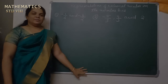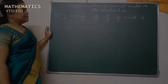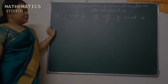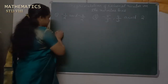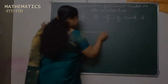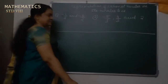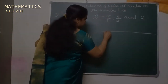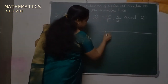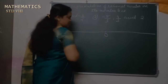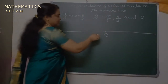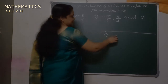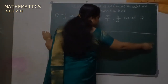How we can represent a rational number on a number line. Here is a number line. From the center it is O, that is the origin. In the left side it is negative values and the right side it is positive values.